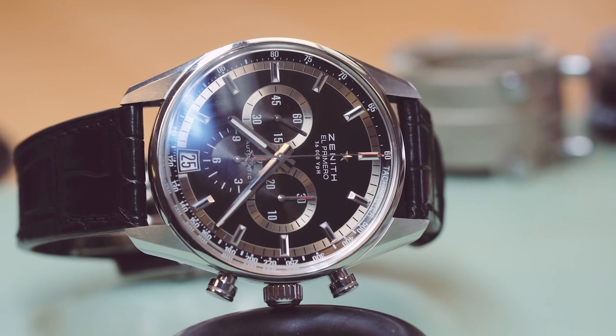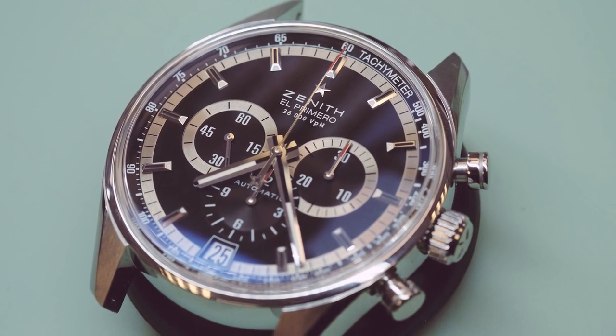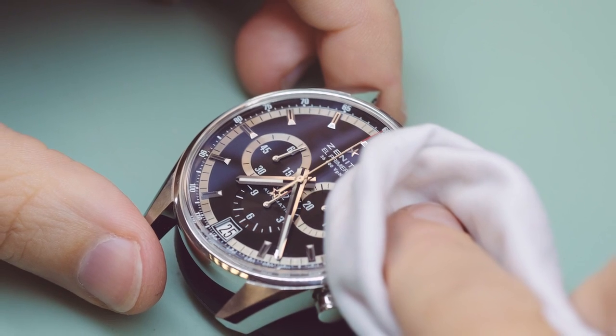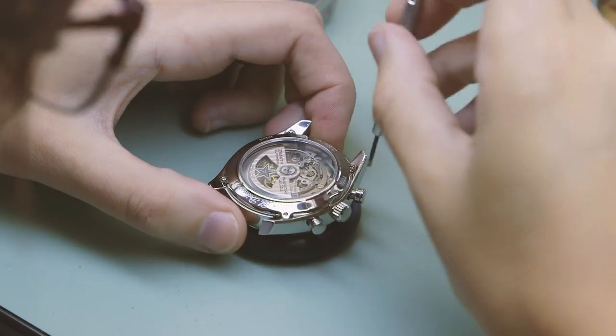The Zenith El Primero was launched in 1969 and it's famed for being the world's first automatic chronograph. For that reason we've chosen it to showcase the elements that go into making a watch shock resistant.